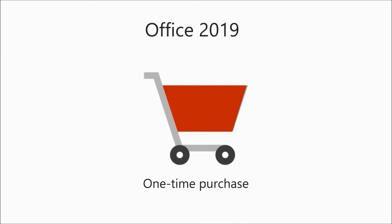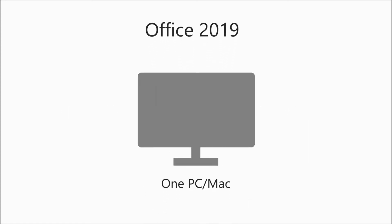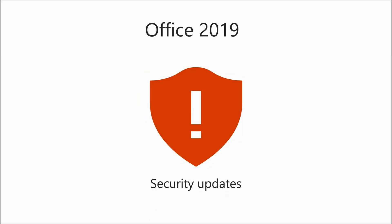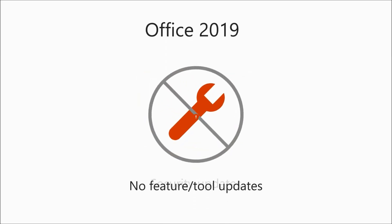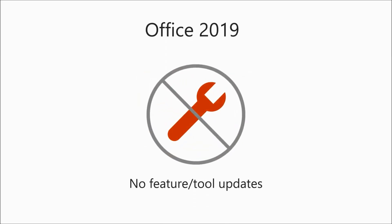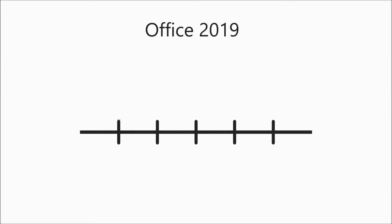Office 2019 is a one-time purchase that can be installed on one PC or Mac. You'll get security updates, but no new features or tools. This means when the next major version of Office is released, you'll need to buy it again to get any new features.